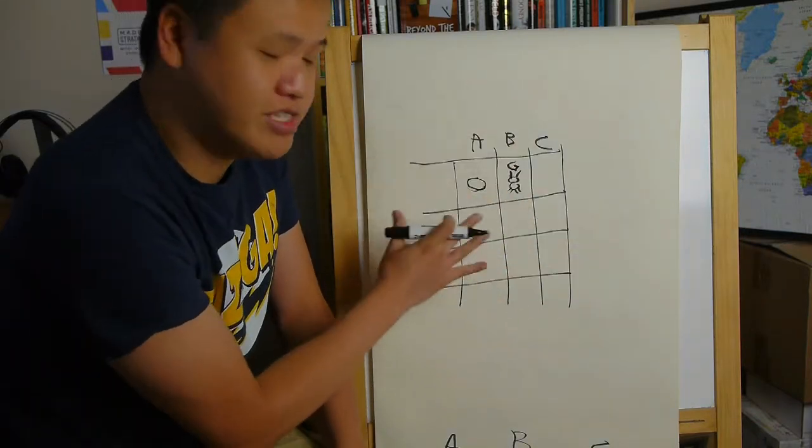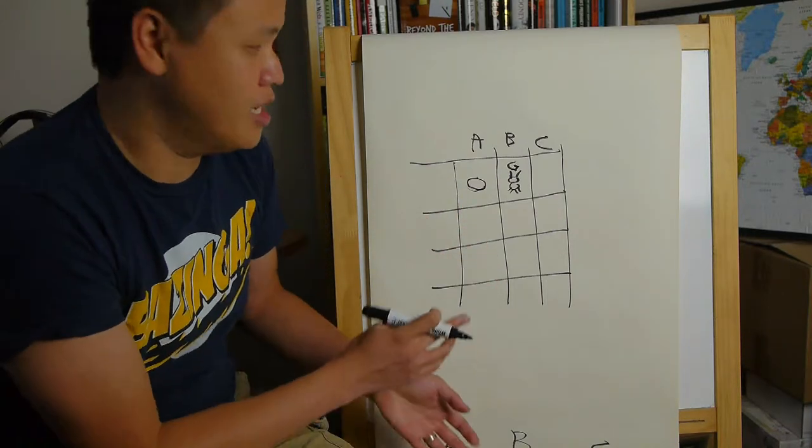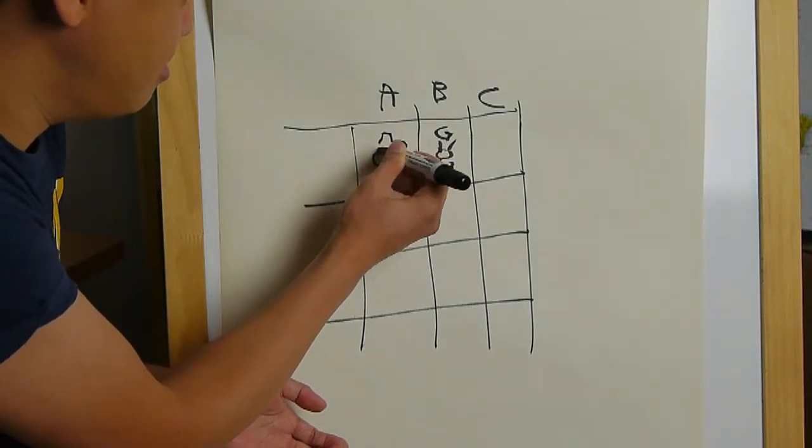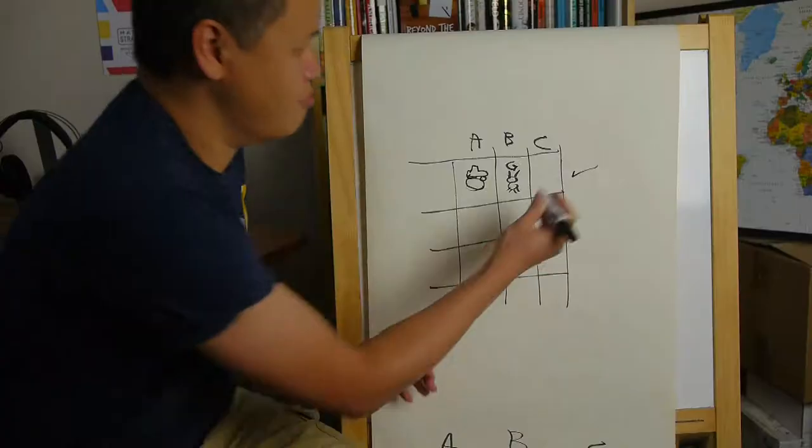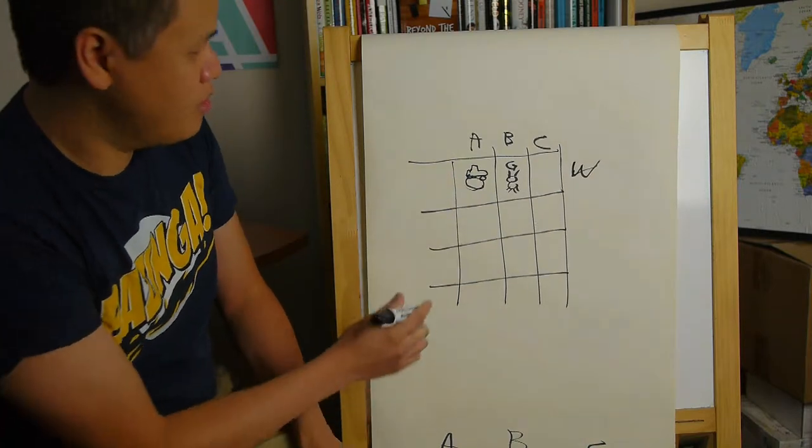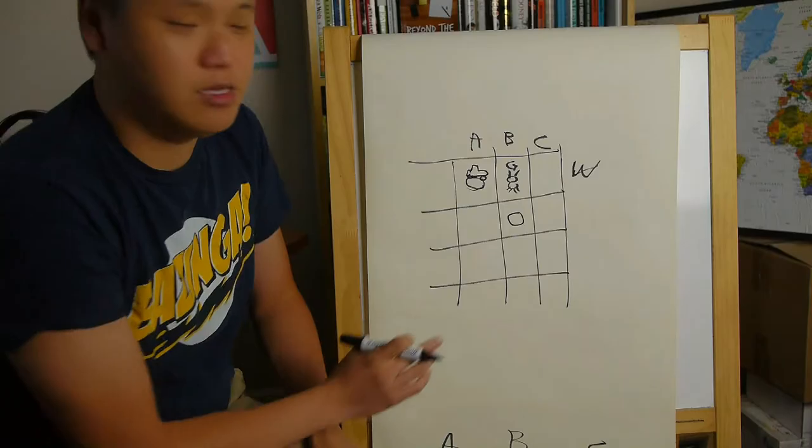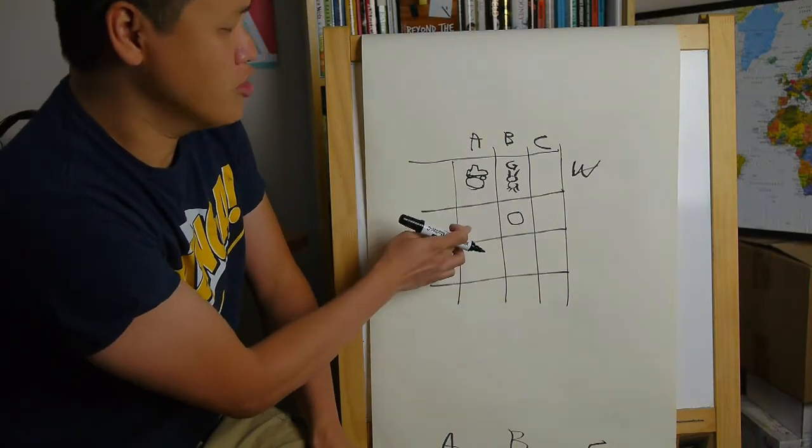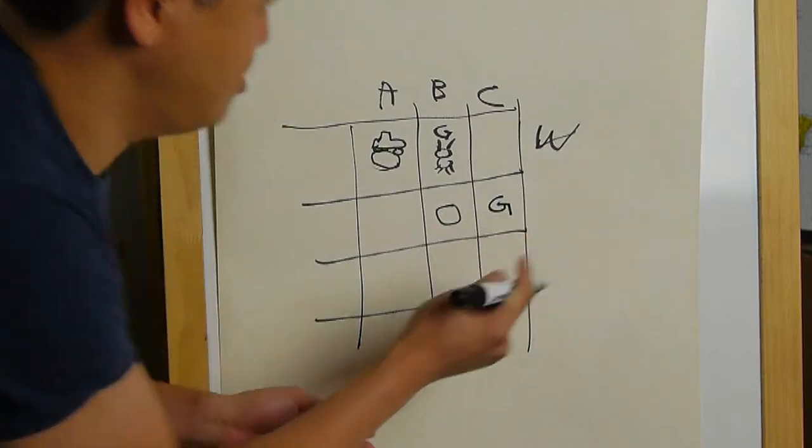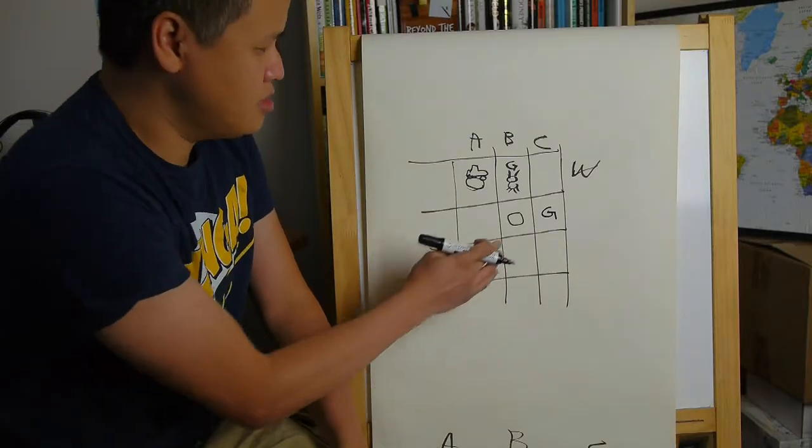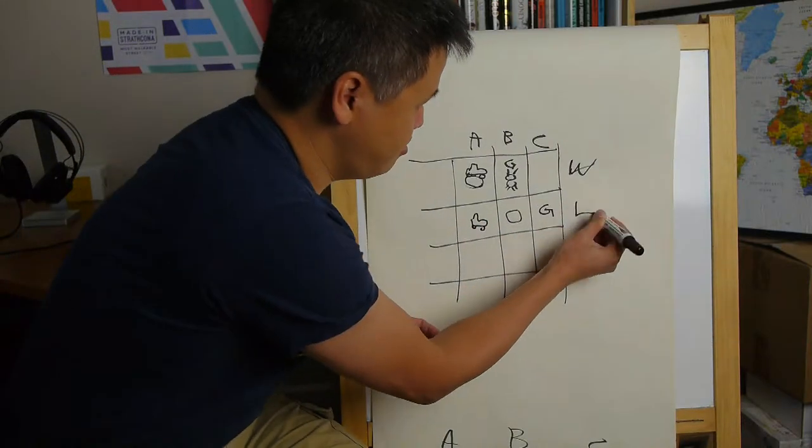Now that we have the goat there, for this series of examples, we'll say that we always stick with our original choice and we don't switch to the other door. In this case, we find out that, yes, there is indeed a car behind door A. In this case, we stick with our original choice. The car is here. And there is a goat behind C. In this case, we stick with our original choice. The car is here. And we lose.